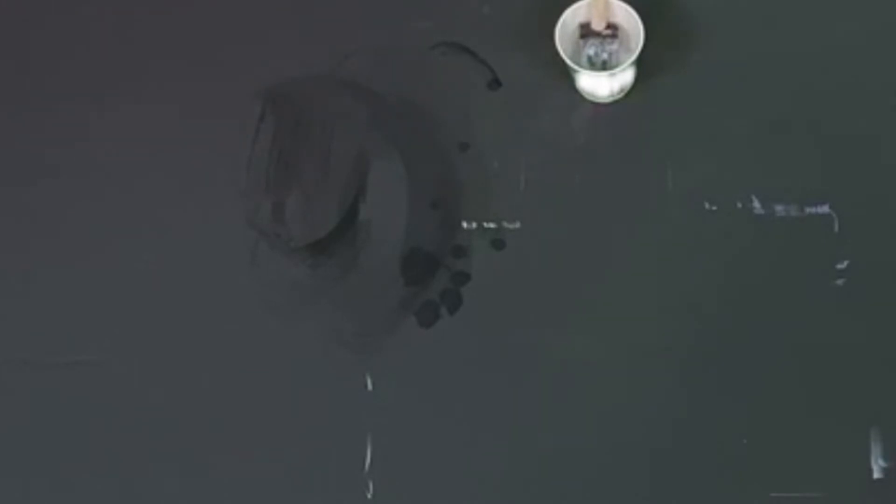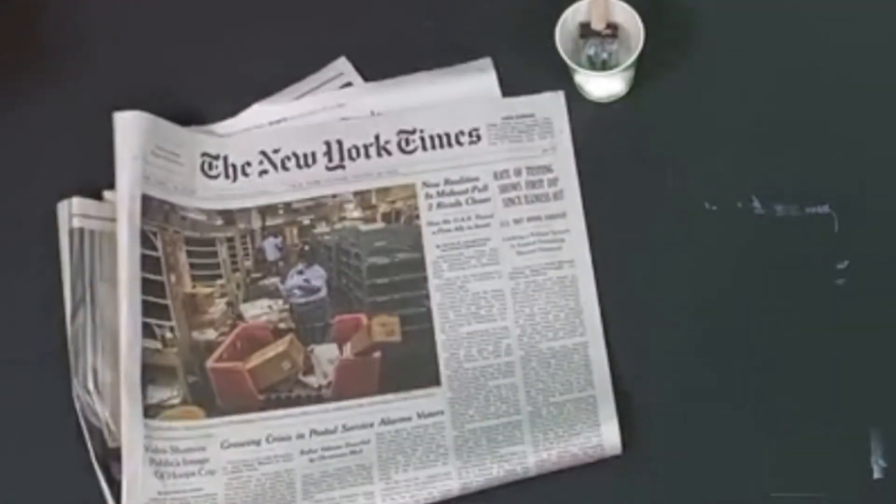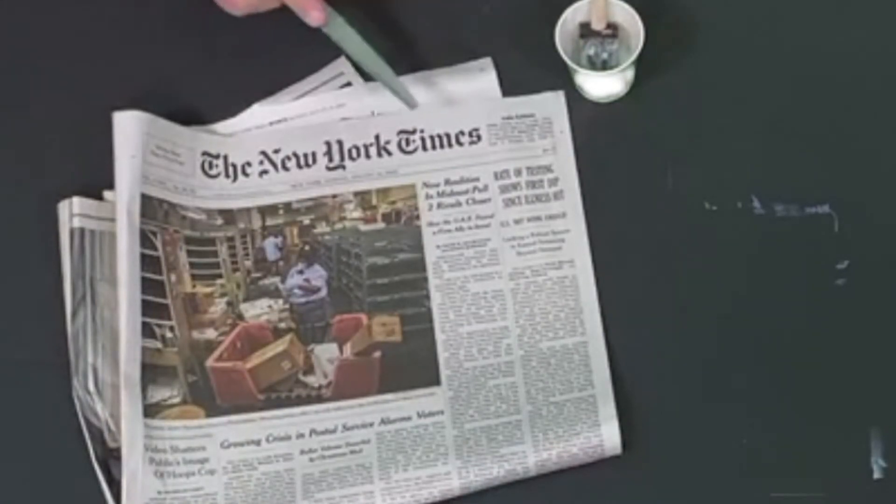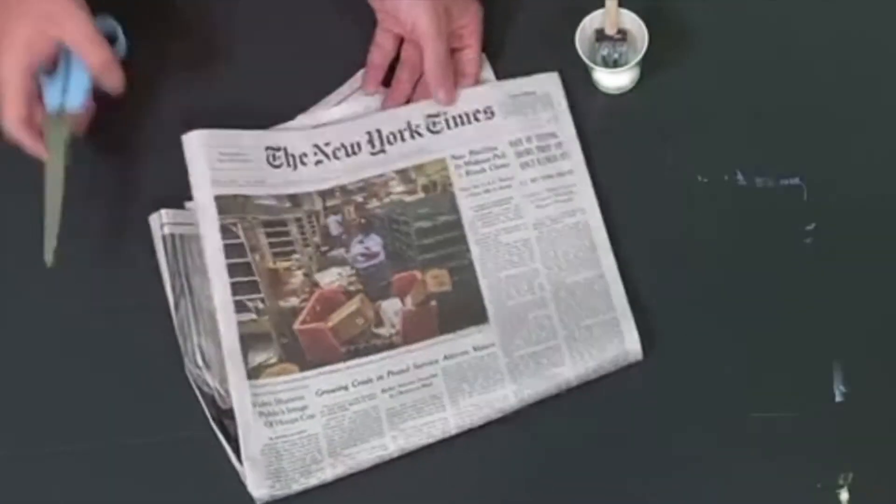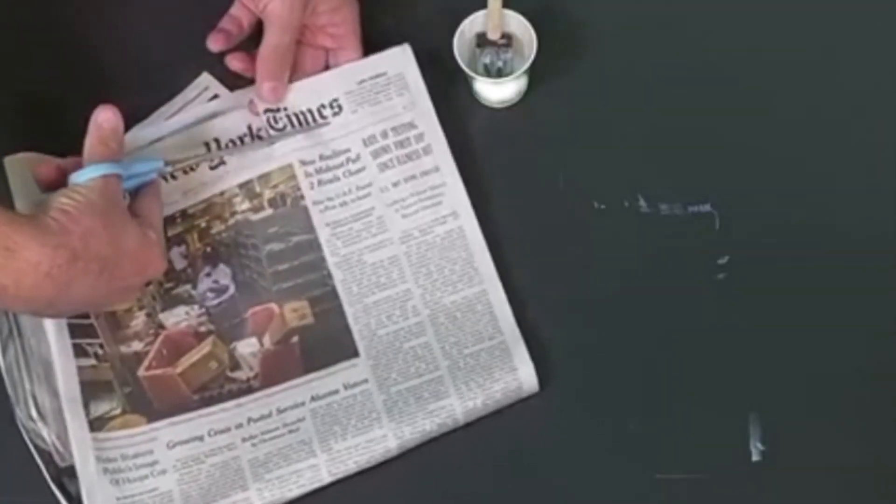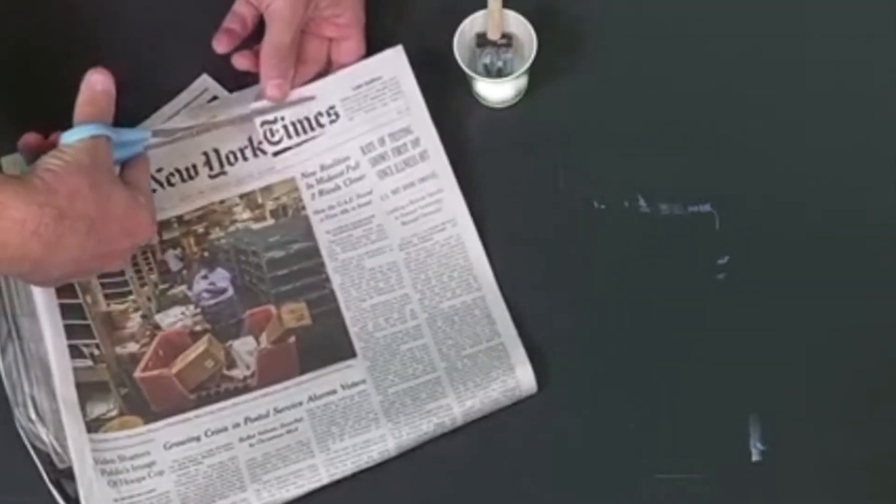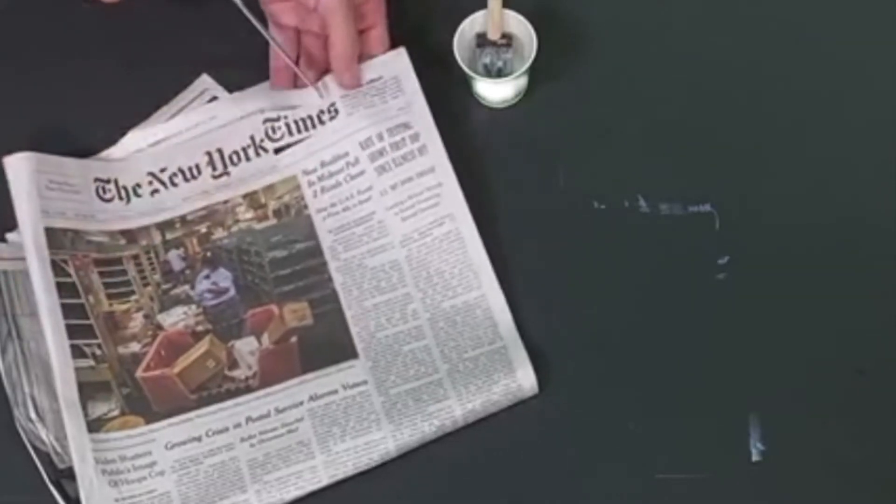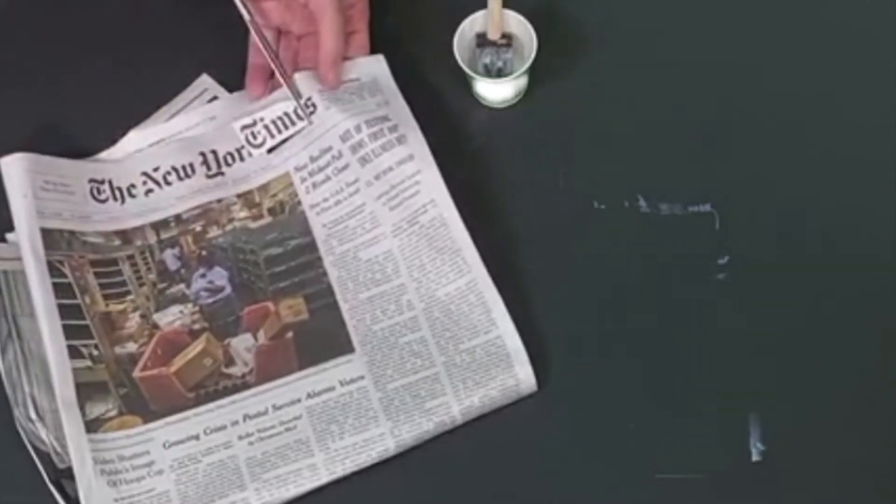Next, find some words or images from the newspaper that connect to the word you chose based on your piece. The one that Dusty is holding is based on the word time. When you find these words and images, cut them out.